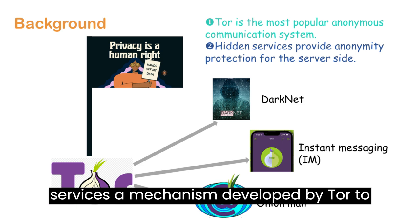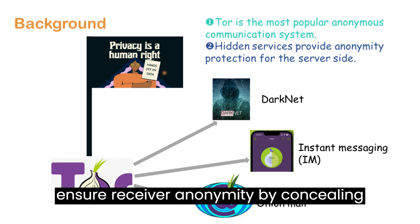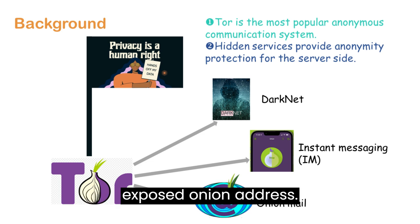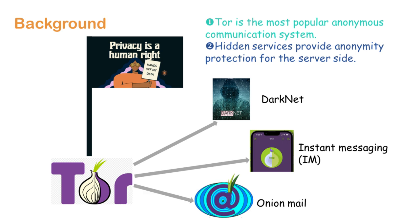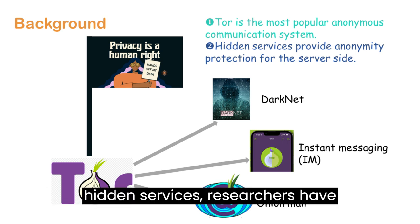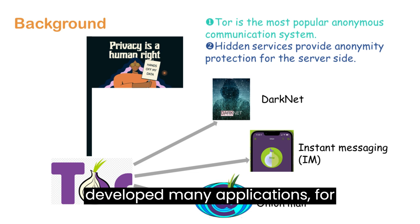The hidden service is a mechanism developed by Tor to ensure receiver anonymity by concealing the IP address of the service through an exposed onion address. Taking advantage of the high anonymity of hidden services, researchers have developed many applications.